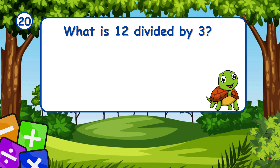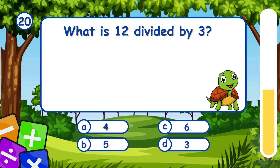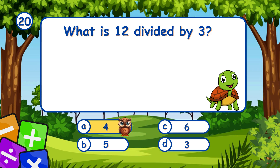What is 12 divided by 3? It's A, 4. 12 divided by 3 equals 4.